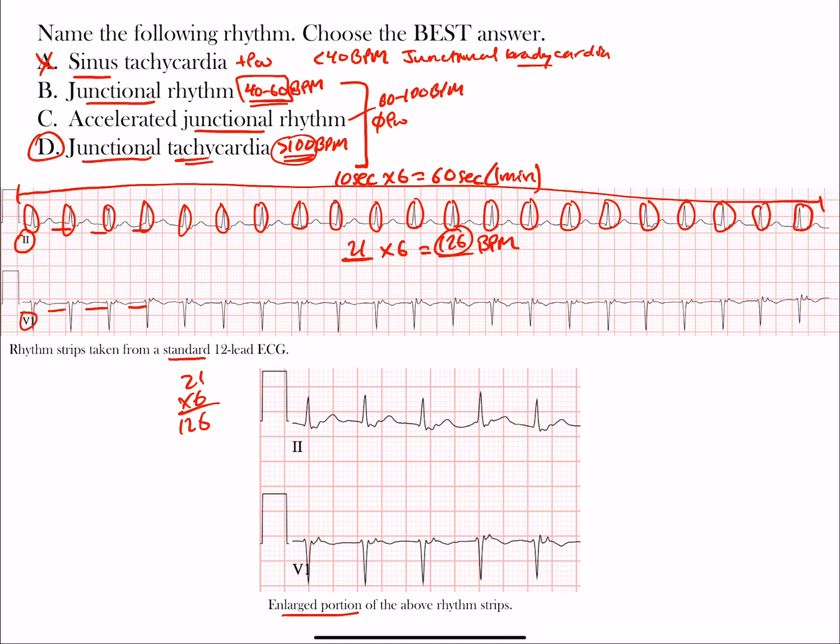Another thing about these junctional rhythms and sinus rhythm is they're regular rhythms, meaning the intervals between each are the same. If you measure the S to S interval here, and then the next one, and the one that follows, you would see these are all the same. That's what we mean by a regular rhythm.